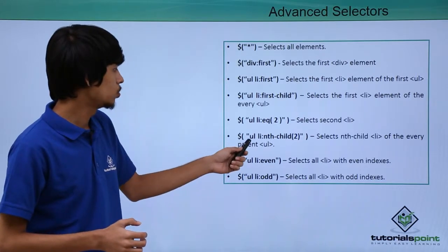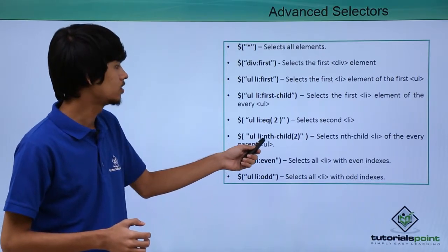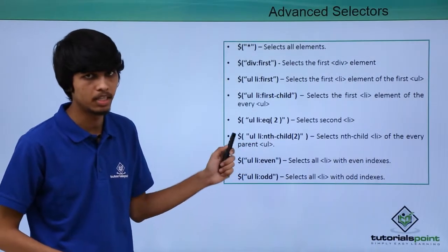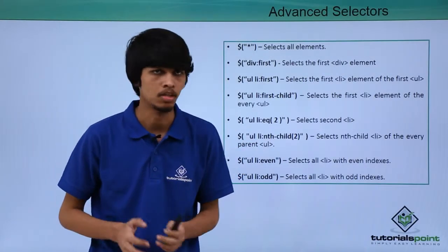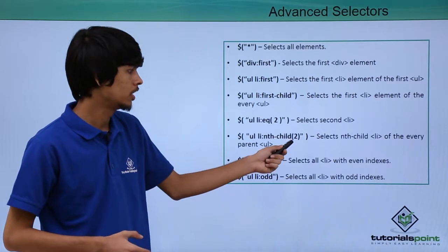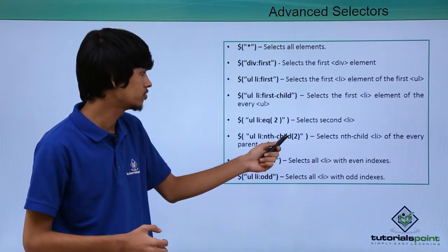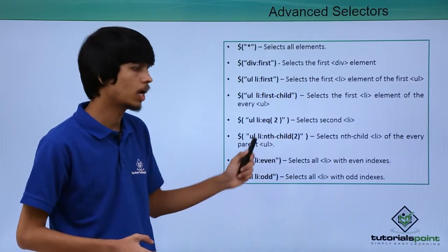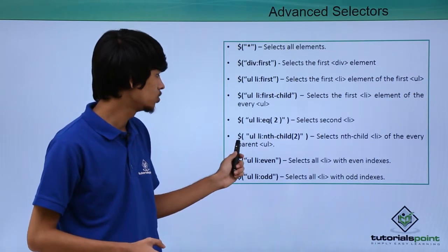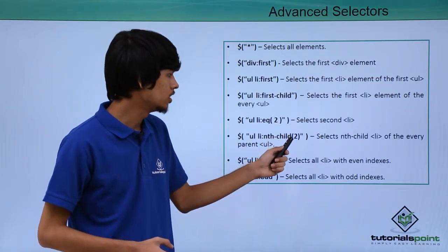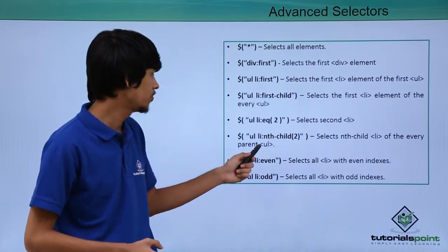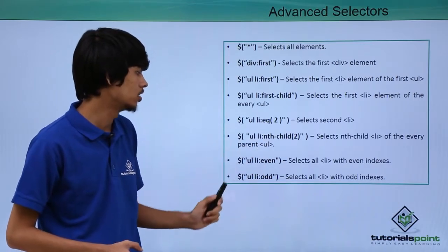Next is dollar ul li :nth-child(2). If we want to select an nth child of every parent element, then we can use the :nth-child selector. In the :nth-child selector, we can give an index number as the argument. Here we have given 2 as the index number, so this selector will select the list item which occurs at the second index of every parent unordered list.